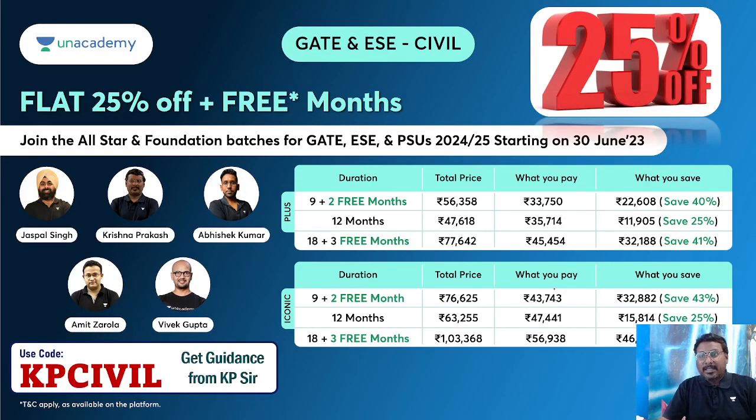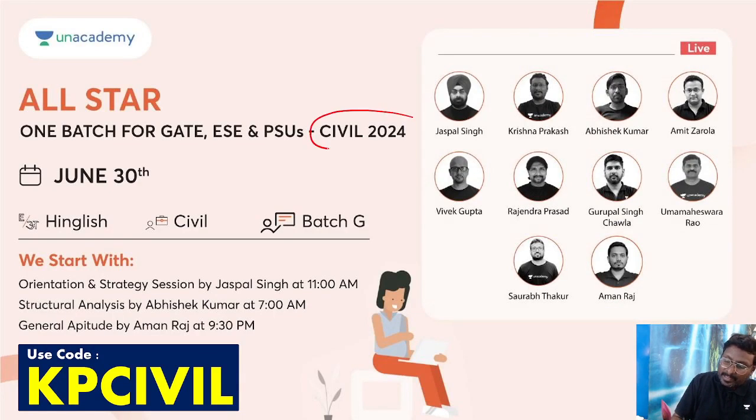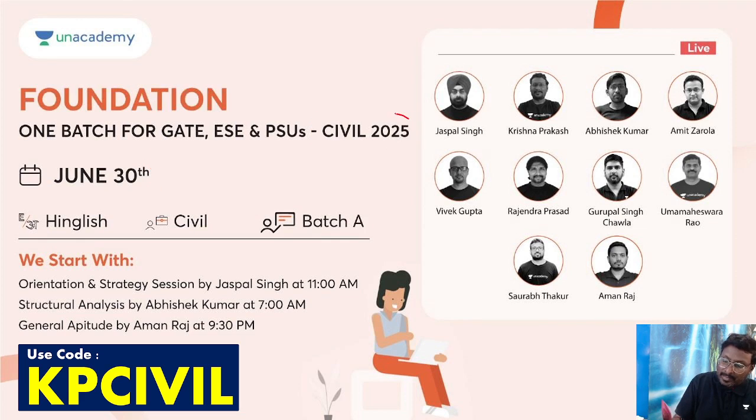Now 25% off is going on on an Academy subscription. Use our Universal Code KP Civil, you will get additional month's benefit and also 25% off along with KP Sir guidance to you. So we are launching new batches for GATE and ESE 2024 on June 30, as well as 2025 foundation batch also June 30.